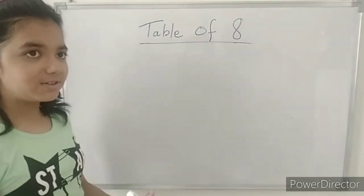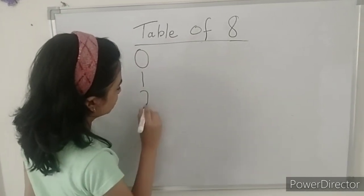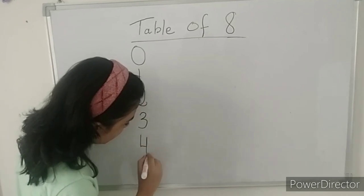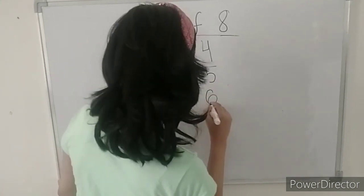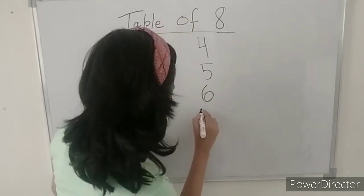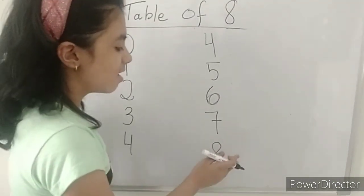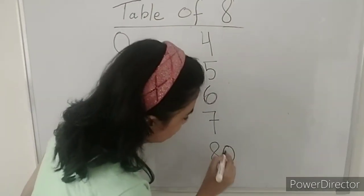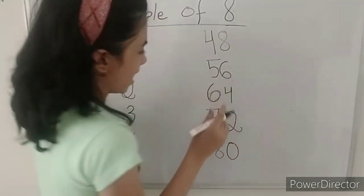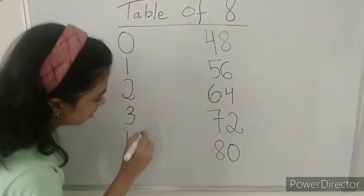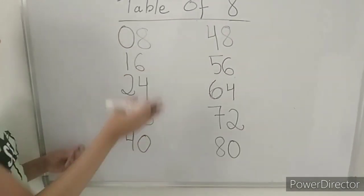Now we will learn the trick to learn the table of eight. First we need to write the counting from zero to eight in a special order: 0, 1, 2, 3, 4, then again 4, then 5, 6, 6, and 7, and then 8. Now from here we will write all the even numbers from 0 to 8: 0, 2, 4, 6, and 8. Then from here we continue again: 0, 2, 4, 6, and 8. This is the table of 8.